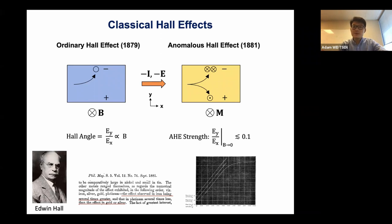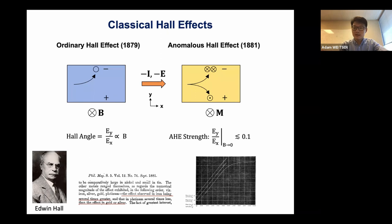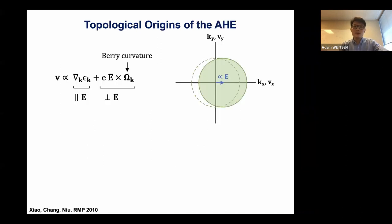It's tempting to think of the reason why this happens as the magnet generating some internal field in your sample, but that's actually not correct. There are generally two reasons why the anomalous Hall effect manifests: one coming from the intrinsic band structure of the material, and the other from extrinsic scattering mechanisms. There's actually a strong connection between the regular anomalous Hall effect and the nonlinear anomalous Hall effect that I'll talk about.